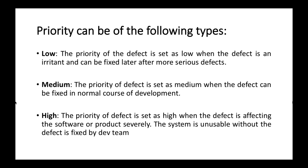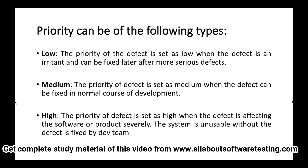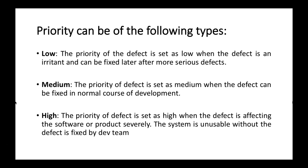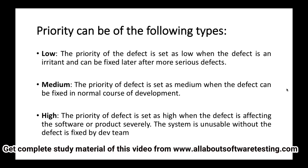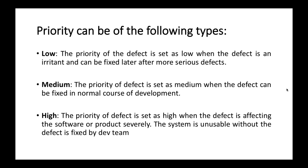The next type is high priority. The priority is set as high when the defect is severely affecting the software or product and the system is unusable until the defect is fixed. For example, when a user clicks the login button and is not able to log in even with the correct credentials — this is a high priority defect and the dev team must fix it urgently.